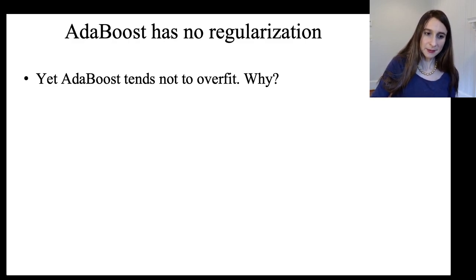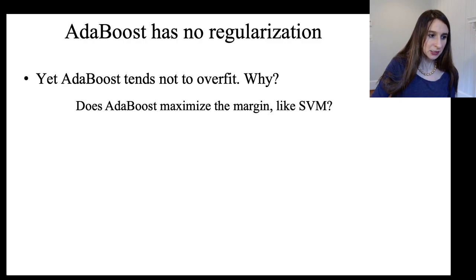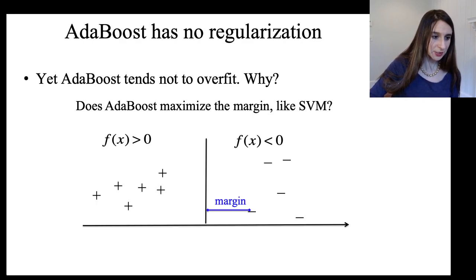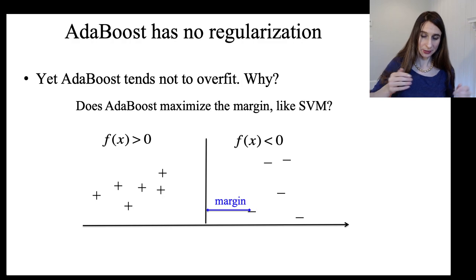But the leading hypothesis on this is a margin theory. So when we talk about support vector machines, you'll find out that support vector machines are designed to maximize the margin, which is the distance between the decision boundary and the nearest training points.